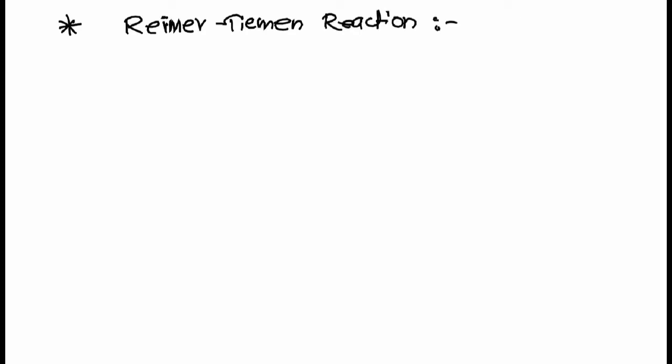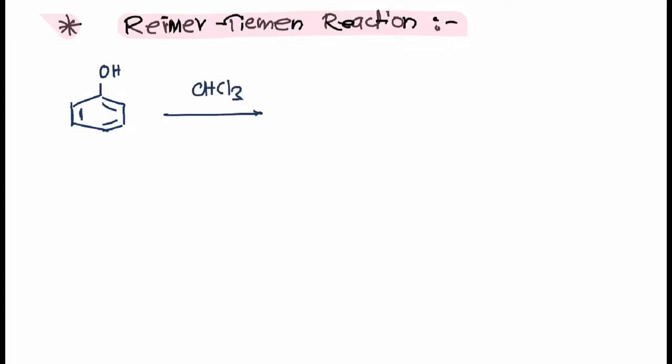This reaction was already studied in Class 12 and at the BSc level we are extending it further. Now we have one more reaction called the Reimer-Tiemann reaction. This reaction is also part of electrophilic substitution. The starting material is phenol, which reacts with chloroform in alcoholic KOH to give ortho-hydroxy benzaldehyde, also called salicylaldehyde.